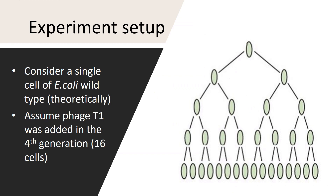To confirm which of these two theories is appropriate, two scientists — Max Delbrück and Salvador Luria — designed an experiment. The experimental setup was such that they considered a single E. coli cell, which is a wild type cell. This single wild type E. coli cell is allowed to grow and divide for four generations.